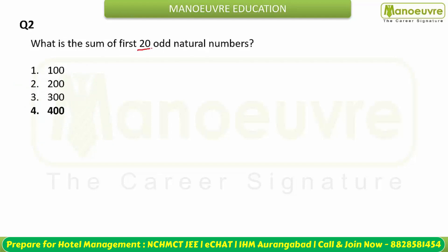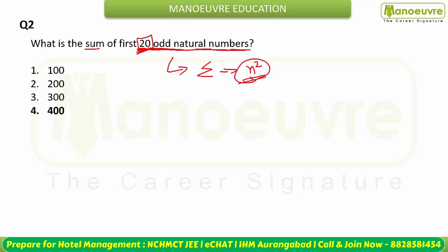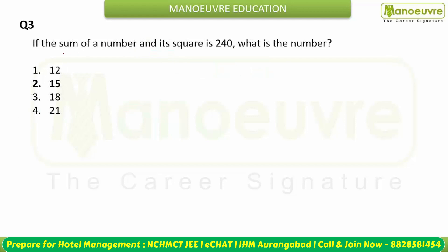Next, you have to find out the sum of the first 20 odd natural numbers. This is a direct question. The formula for the sum of odd natural numbers is given by n², where n is the count. Here n is 20, so 20² = 400. Option D, 400, is the answer.